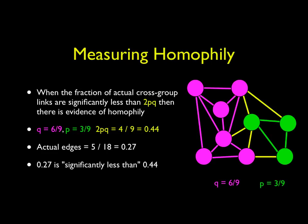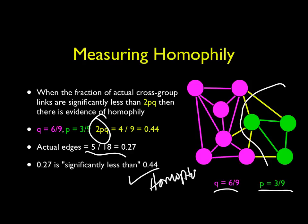The calculation is very simple. Choose your split, calculate your P, calculate your Q, calculate your 2PQ, then figure out the number of edges that cross your little split, and then compare the two. And if it's less, then you've got homophily. This means yes, homophily. Yes, we've got it.